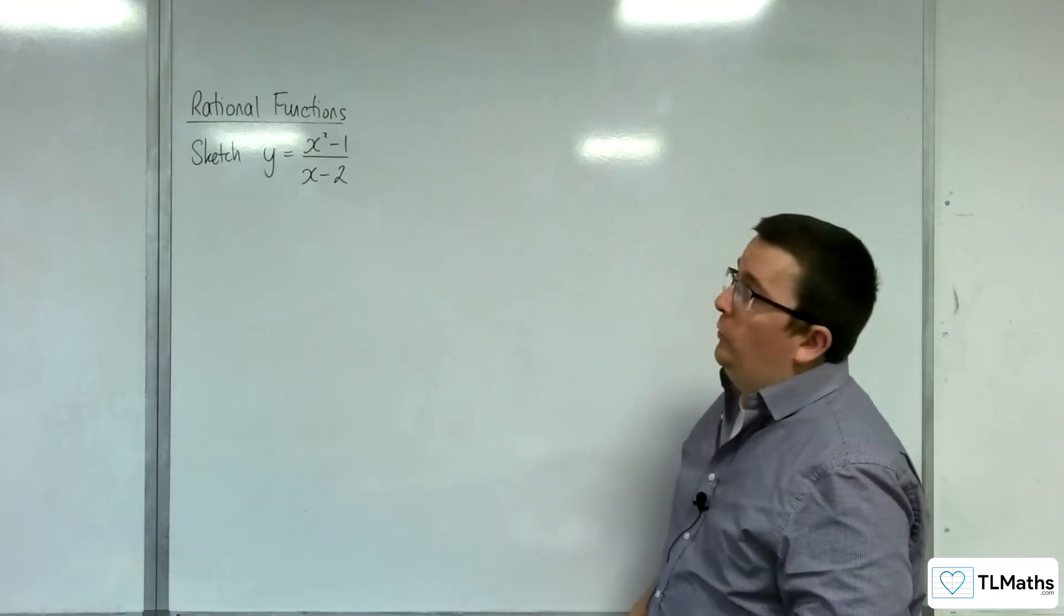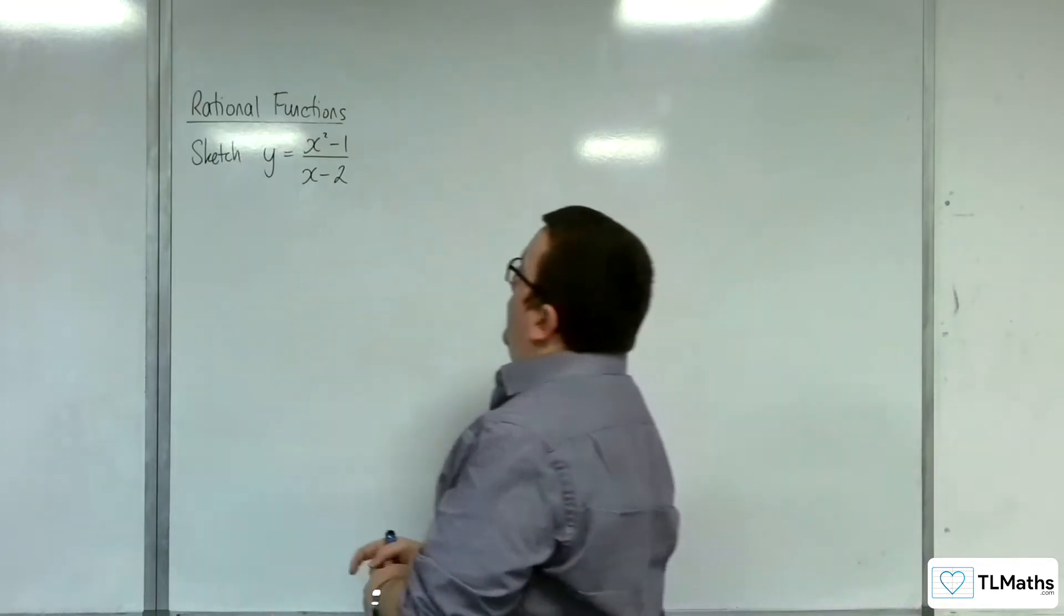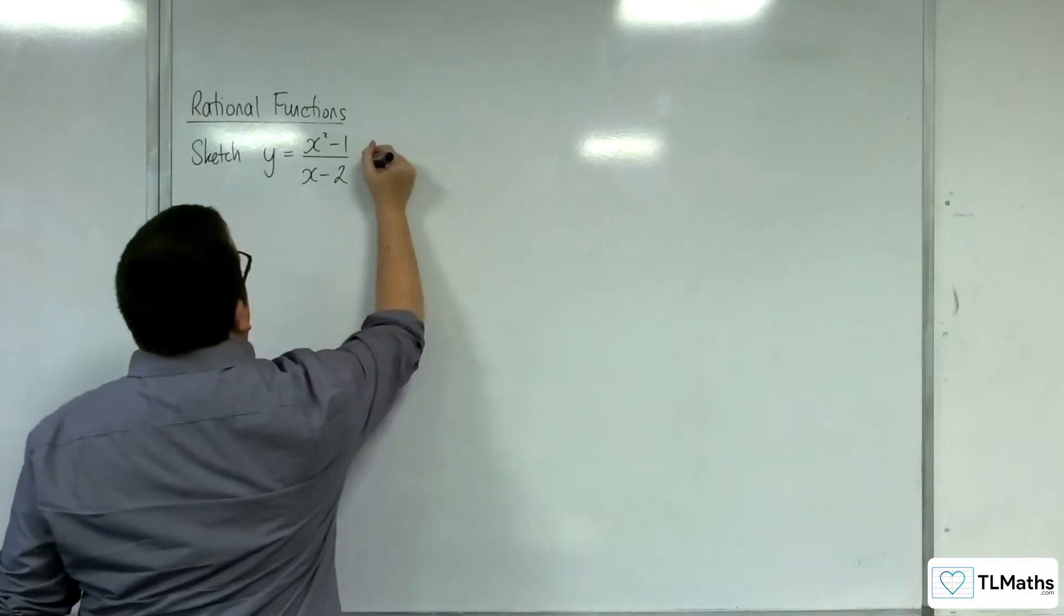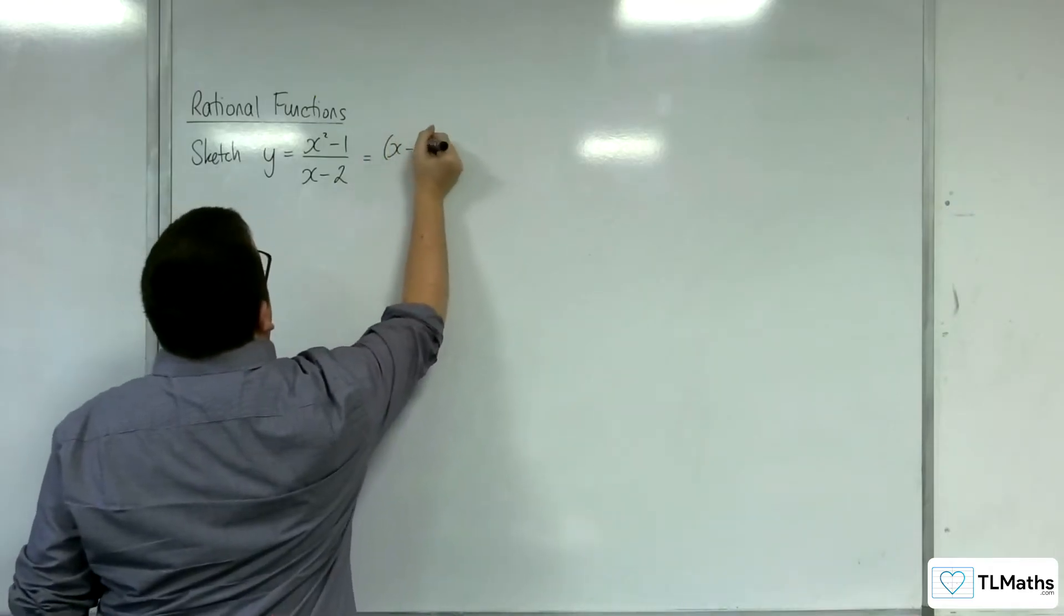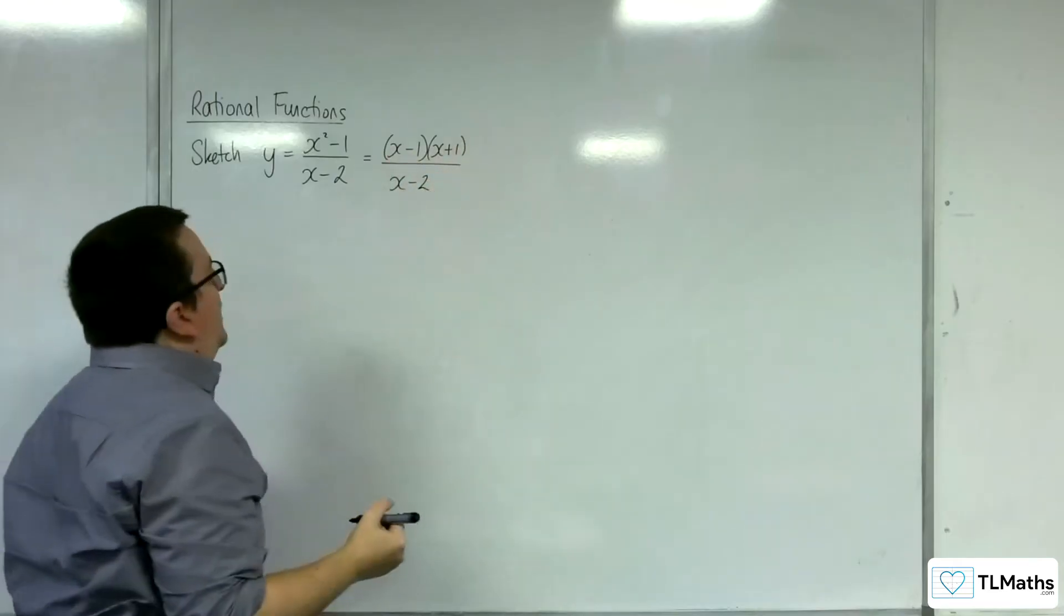In this video, I'm going to be sketching y equals x squared take away 1 over x take away 2. So the first thing to note is that the numerator can be factorised. The difference of two squares to x take away 1, x plus 1. And the denominator stays the same, x take away 2.